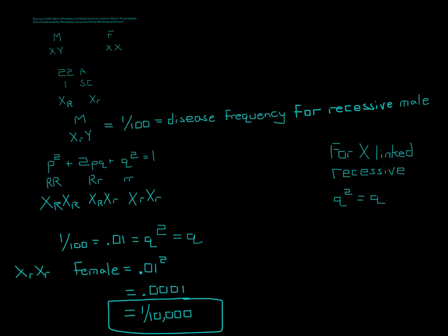So now, since we have the allele frequency - because 1 out of 100 is the allele and the disease frequency - now we can solve it for females. So we know that Q squared is the homozygous recessive.